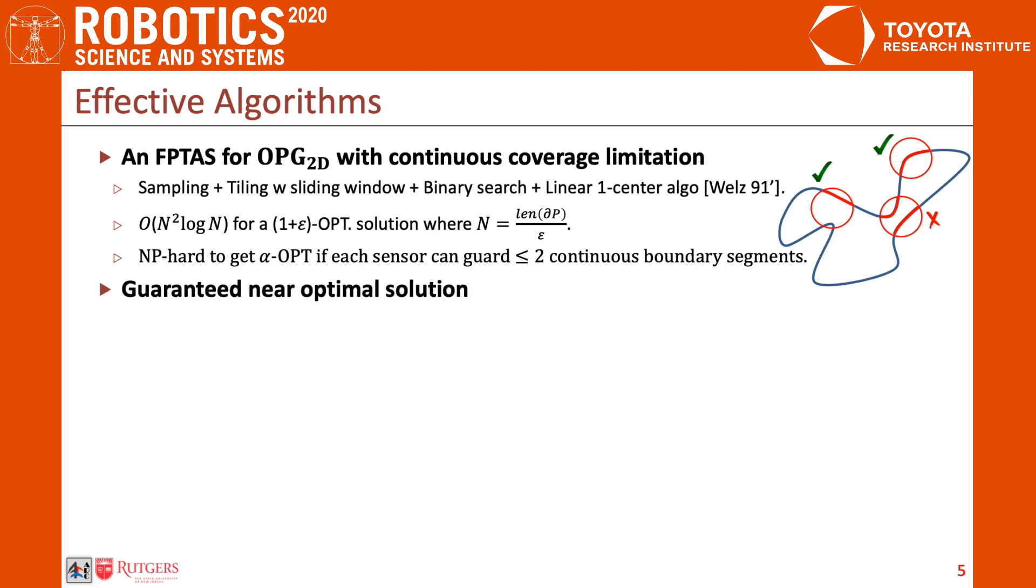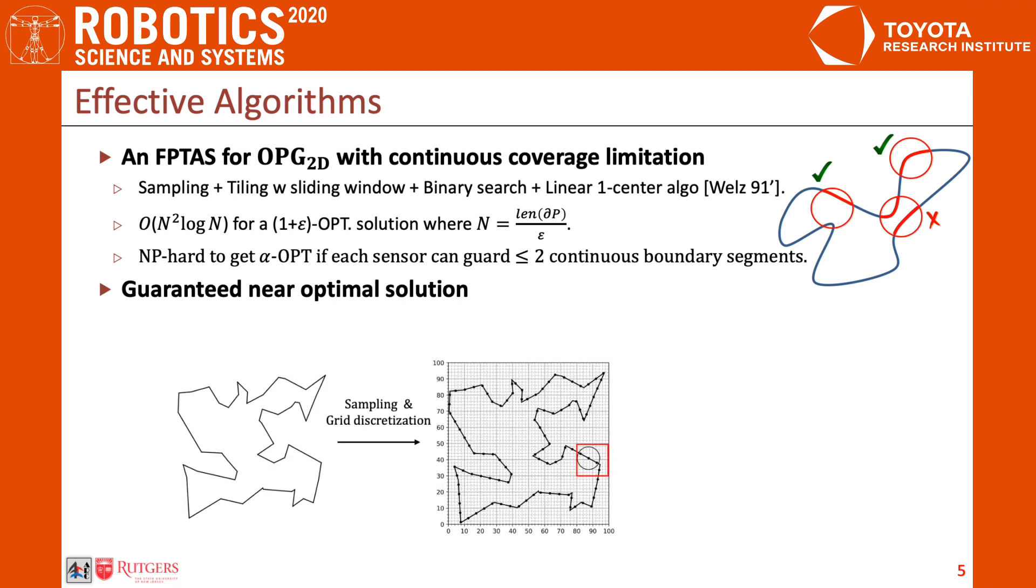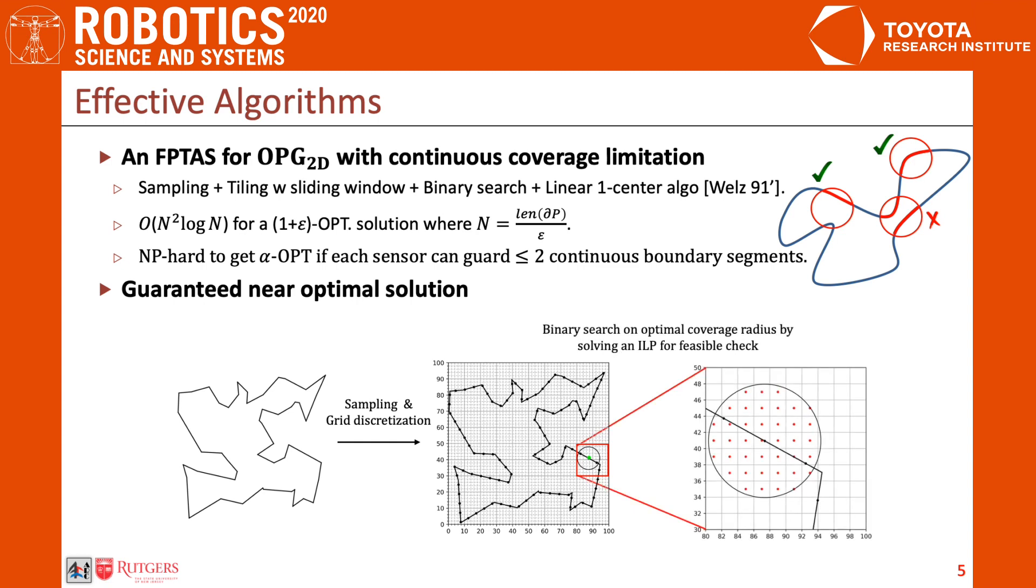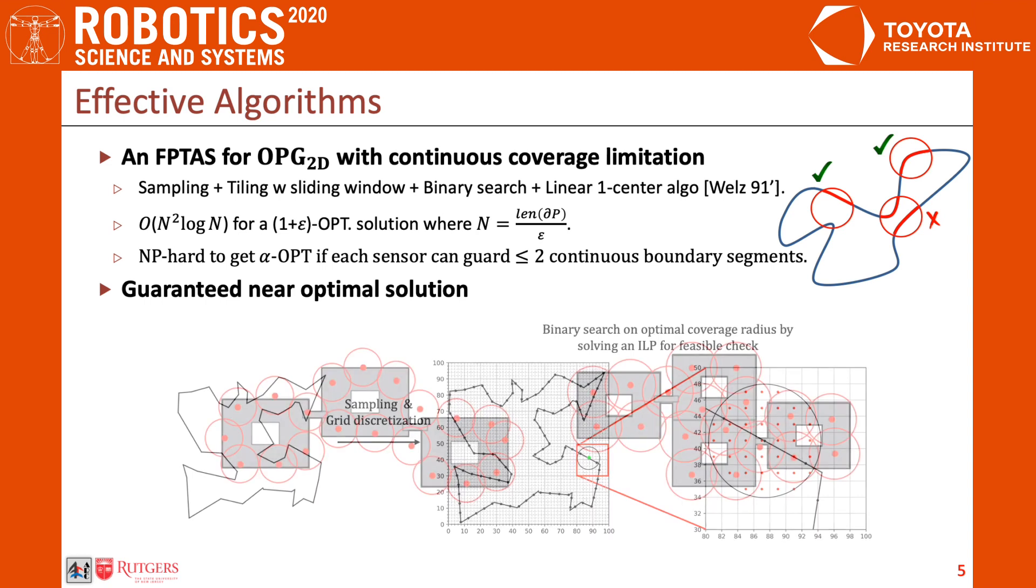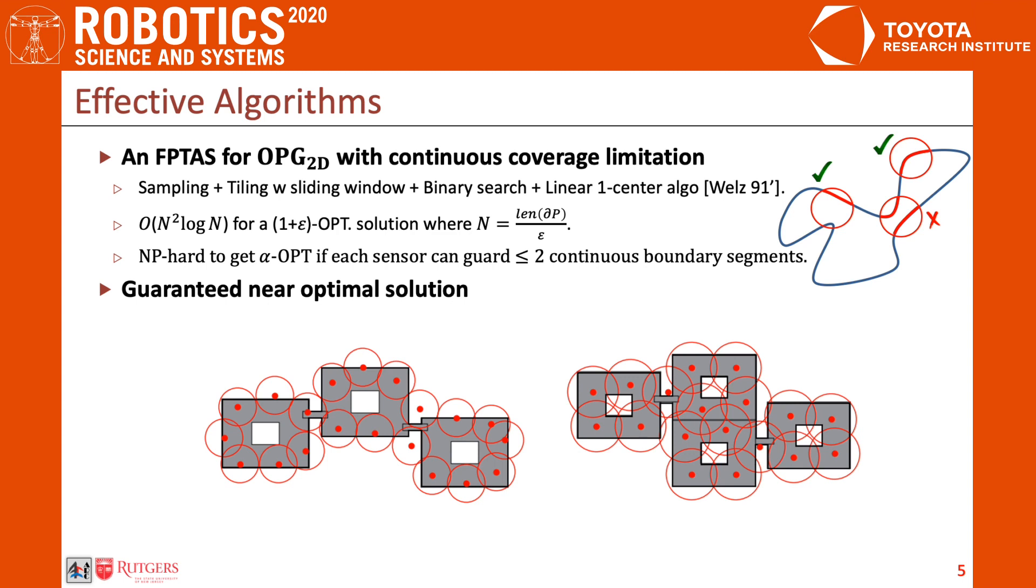Besides this algorithm for OPG-2D with continuous coverage limitation, we also developed an effective integer linear programming-based method for general OPG-2D and ORG-2D problems. Using a combination of sampling, grid-based discretization, and binary search for the optimal coverage radius, the method could readily tackle problems with 100 robots. We emphasize here that these methods not only work for simple polygons, but are also applicable to disconnected regions with holes as well as complex perimeters with gaps using the methods developed in our previous optimal perimeter guarding work.